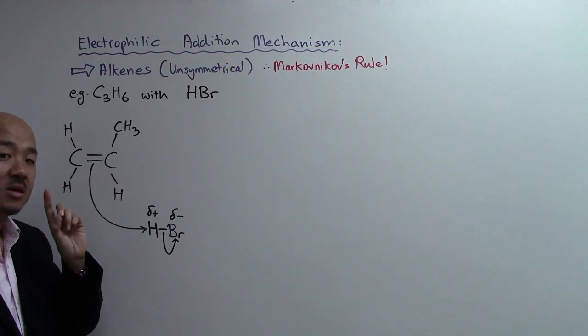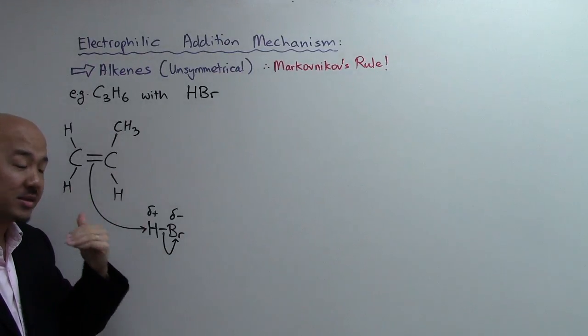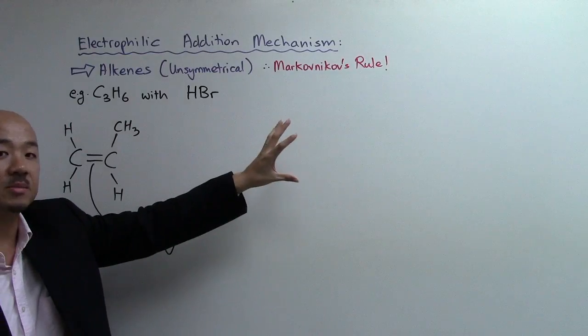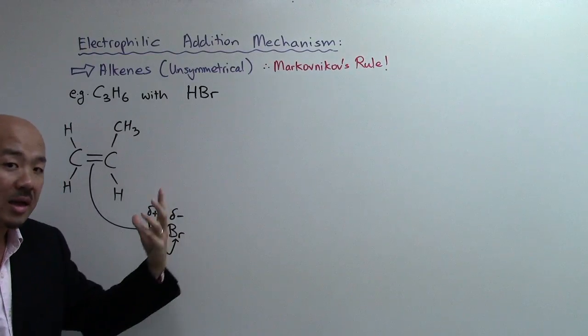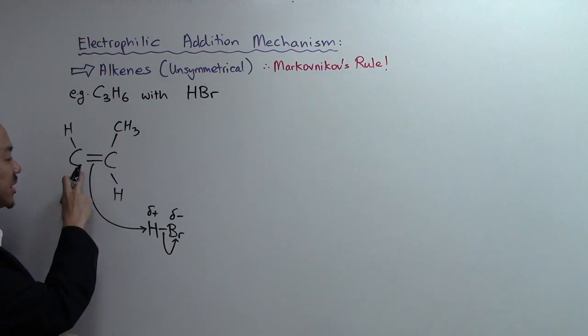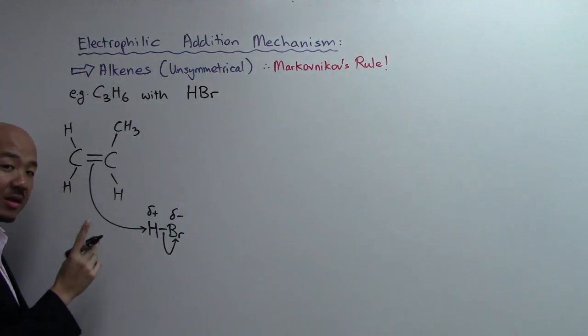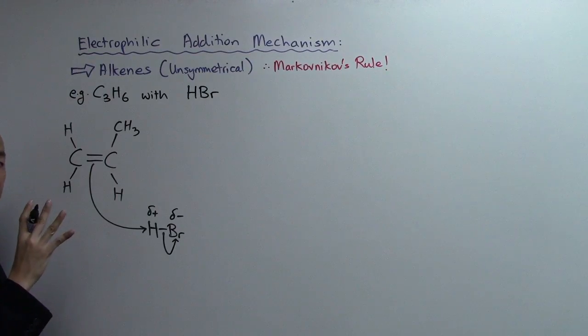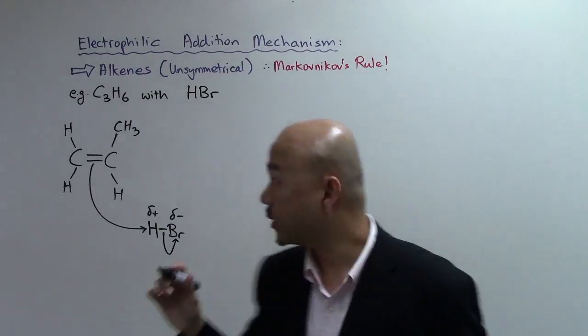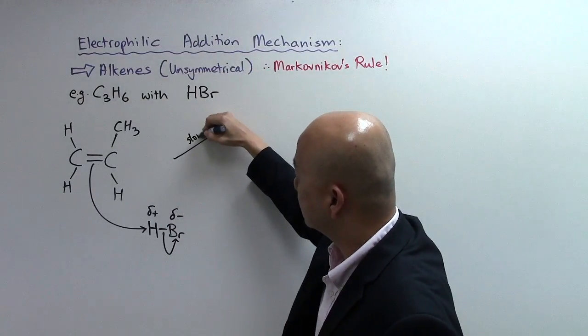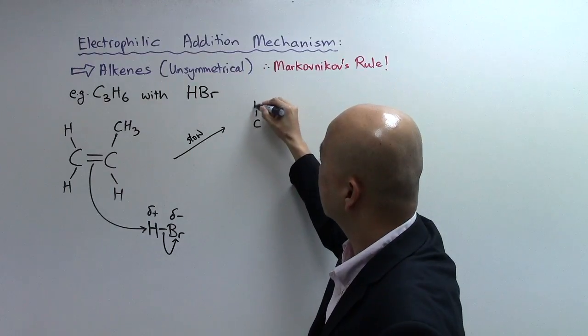So this will then be your first step in electrophilic addition, known as the slow step or the rate determining step, and this will get you your carbocation intermediate. Now what happens is the hydrogen has a choice to be either attached to this carbon or this carbon, and because of that you have two different carbocation intermediates.